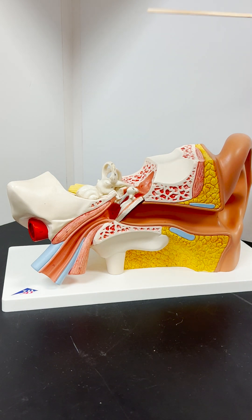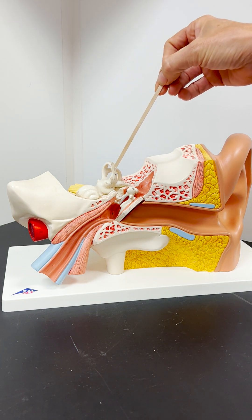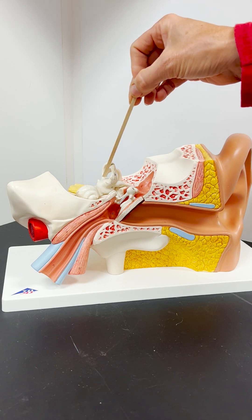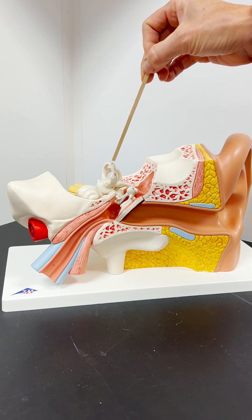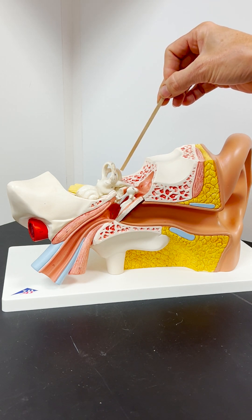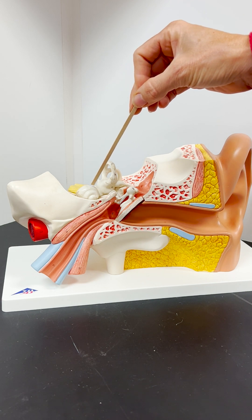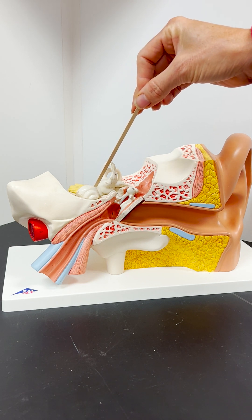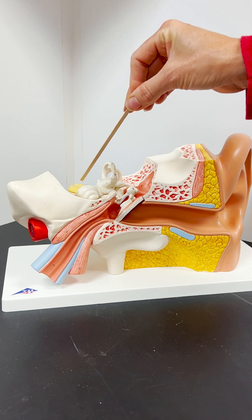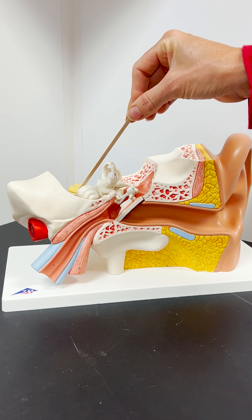The inner ear is the place where we have the cochlea and the vestibule, along with the semicircular canals. The cochlea is responsible for interpreting those sound waves and sending that information along the cochlear nerve.